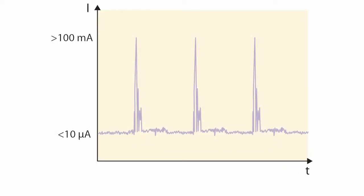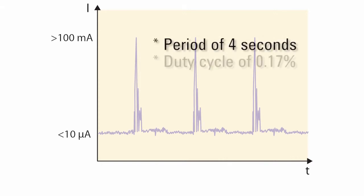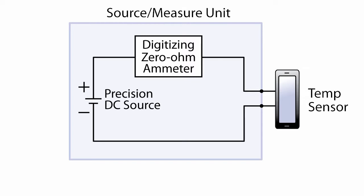In the following measurement example, the battery drain current of a wireless temperature sensor has the following characteristics: period of 4 seconds, duty cycle of 0.17%, crest factor of 400. The N6781A SMU was used to both power the temperature sensor and to measure the sensor's current consumption. The internal 0 ohm ammeter is key to precise measurements of low-level current.